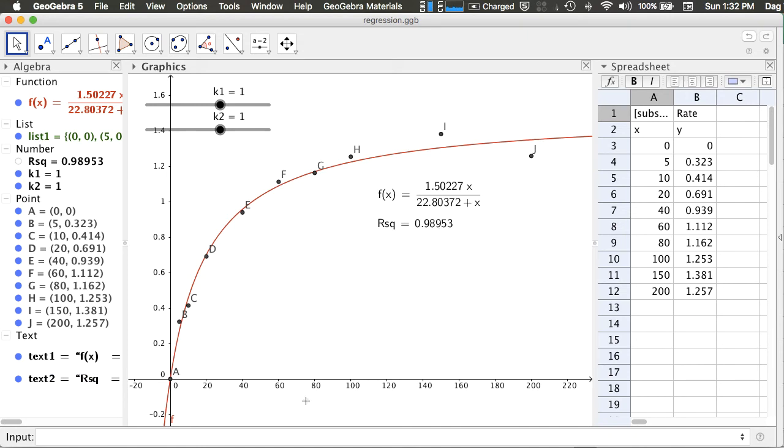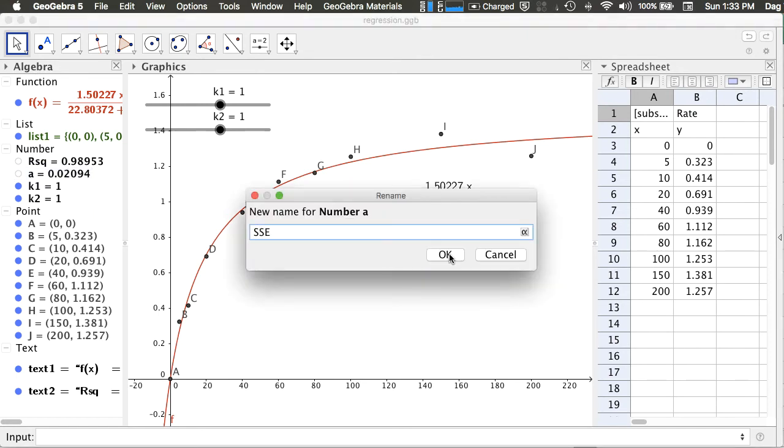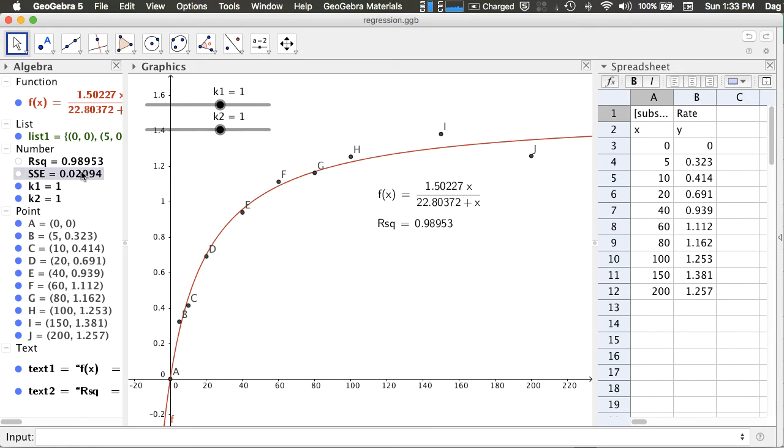There are additional measures in regression that you can also calculate in GeoGebra. For example, you can use the command sum squared errors to calculate the sum squared error, which is what the regression model actually tries to minimize. The easier way to rename it is just to click on the number, type on your keyboard, and drag this to the graphics panel.